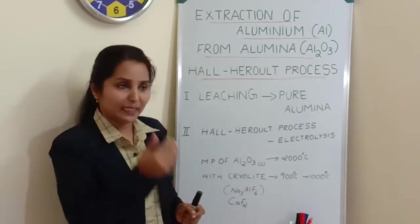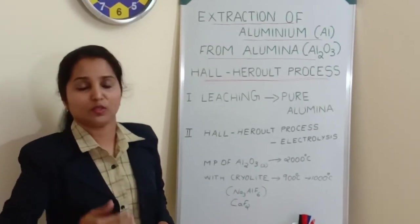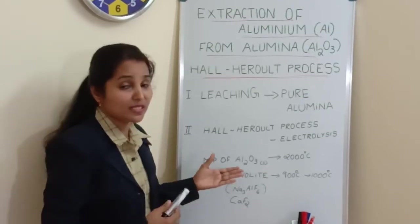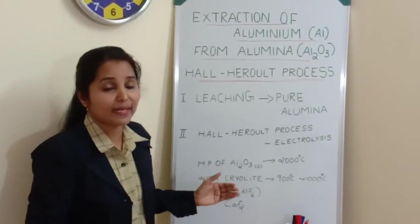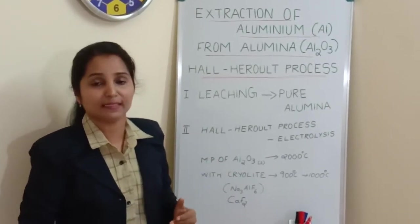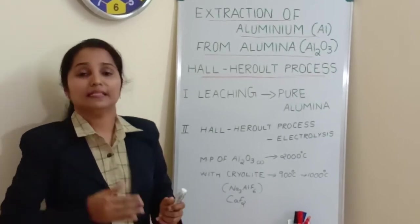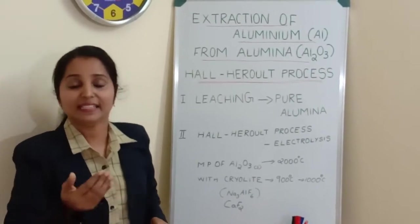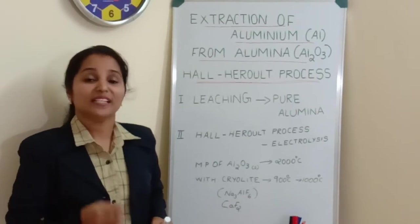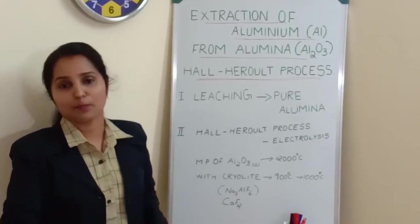By making into its molten state or in its liquid form, what happens to this solid alumina? This solid alumina in its molten form or in its liquid form, its electrical conductivity increases. Now it is ready for Hall-Héroult process.